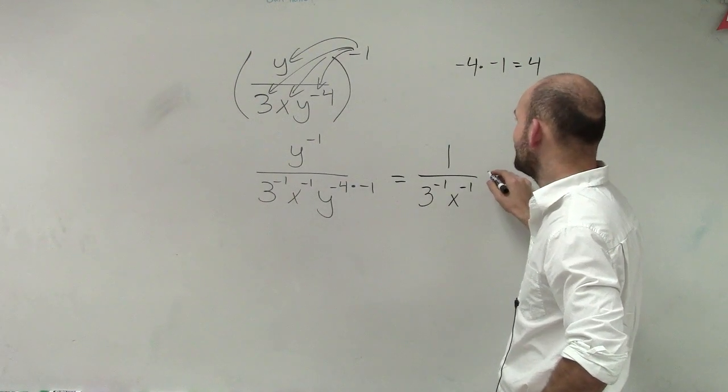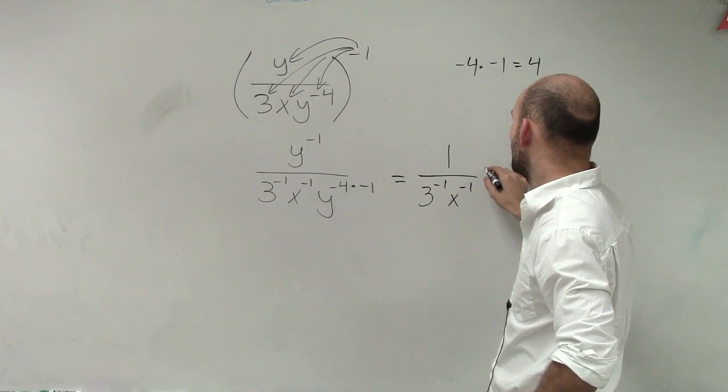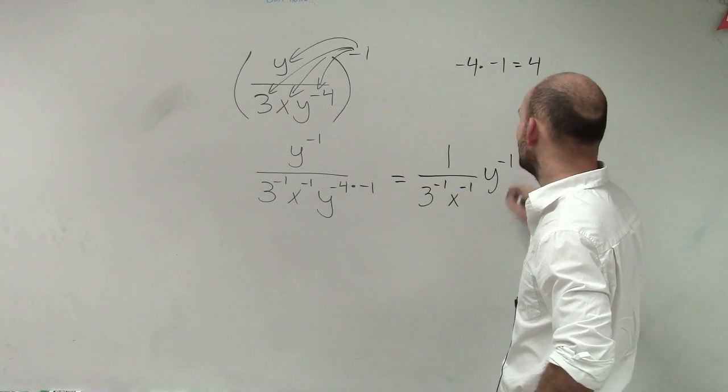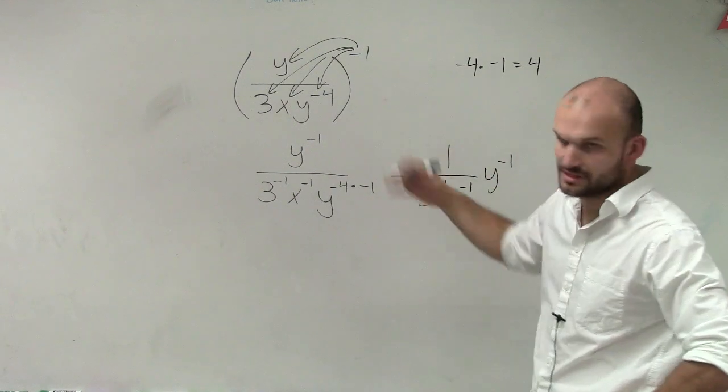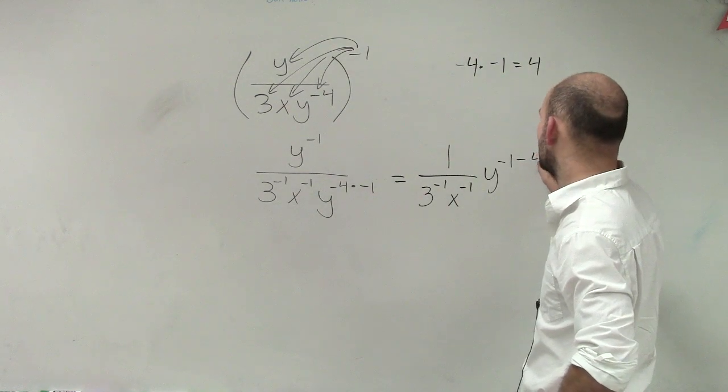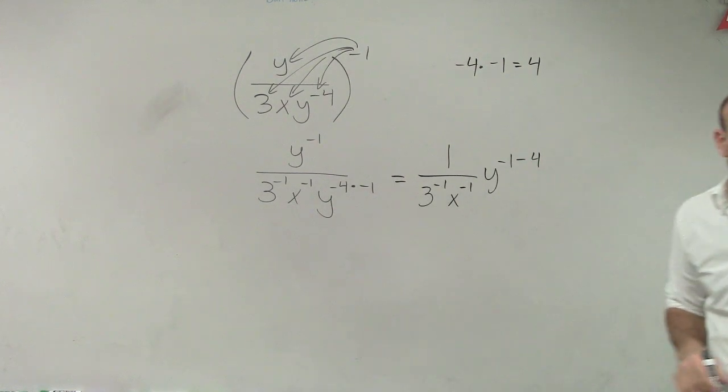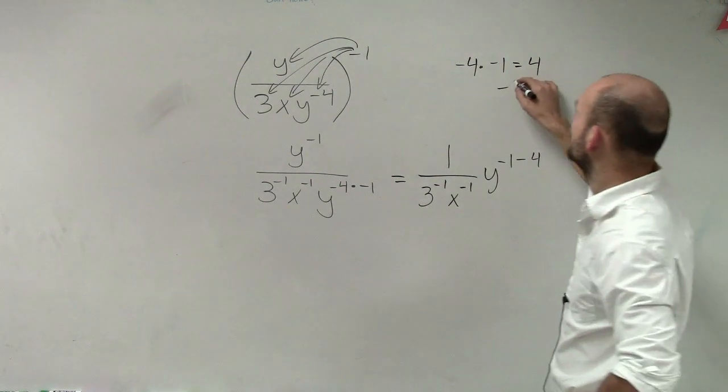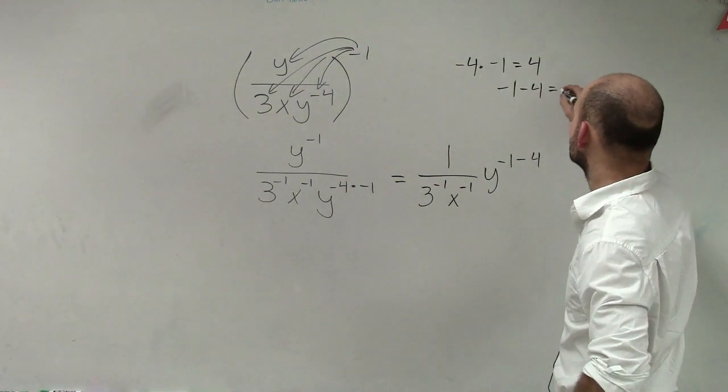So what I have here is y to the negative first, this is in the top, to the negative first minus 4. Now that's going to be negative 1 minus 4 equals negative 5.